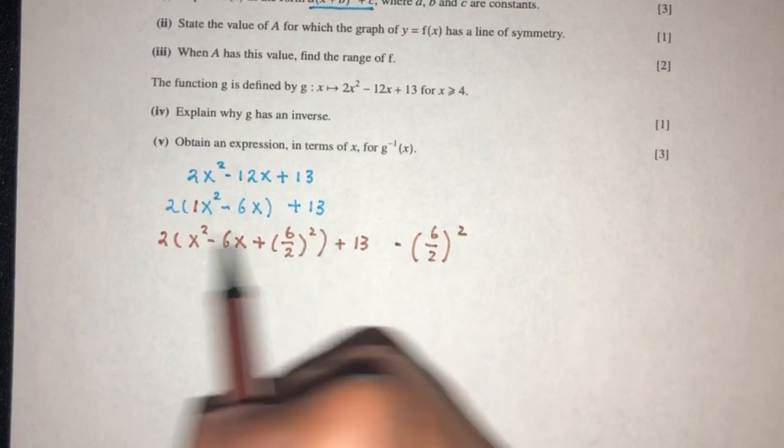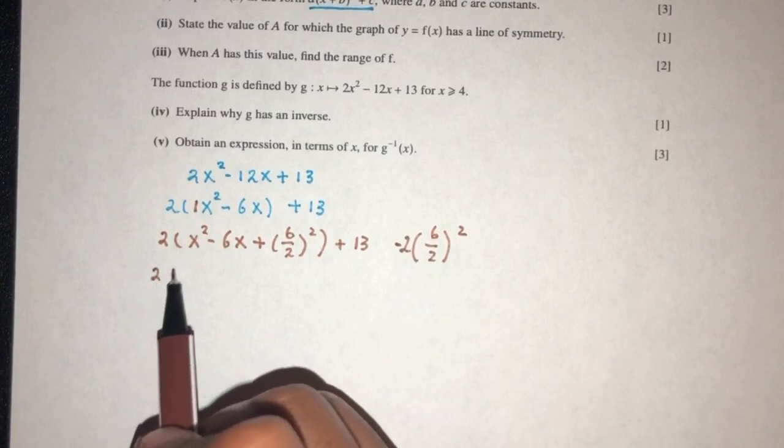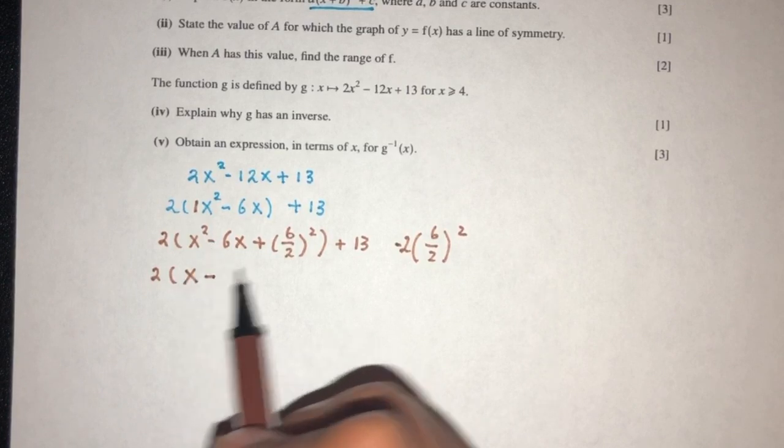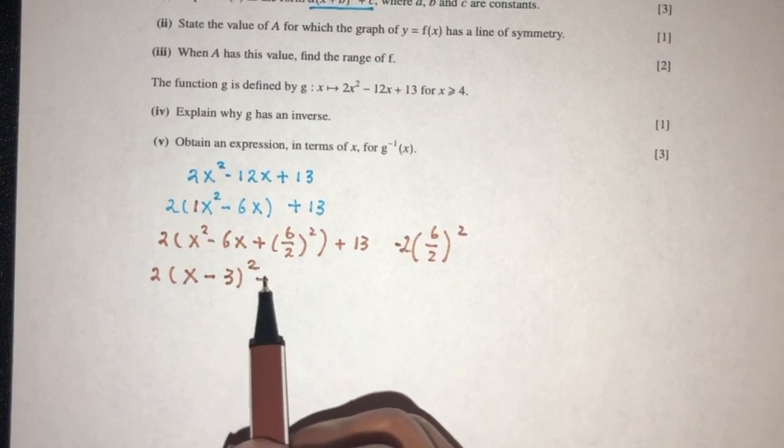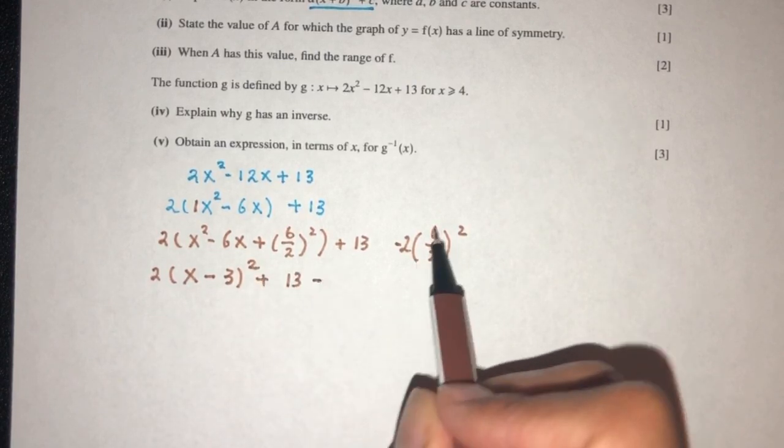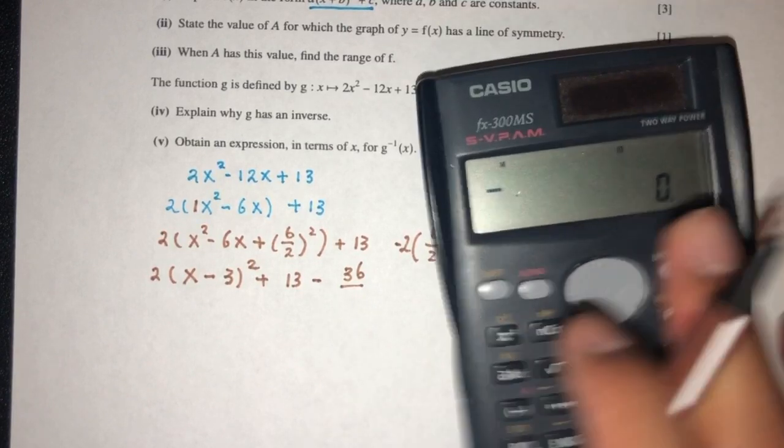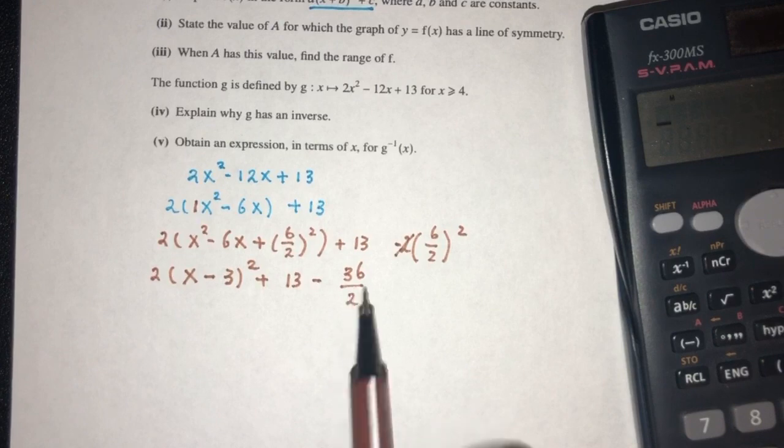Now because it was inside the bracket, we also have to give it the value of 2. Now simplify, x squared here, we have to write x, here we have minus, we write minus, here we have 3, we write 3, and here we have square, we write square. Now that will be plus 13 minus the value of 36 over the value of what? So here we have minus 2, that will be 4, cancel out, you have 2 remaining here.